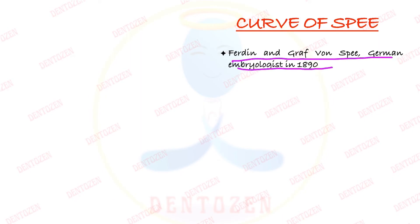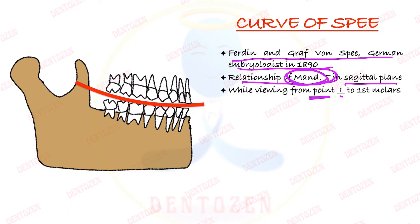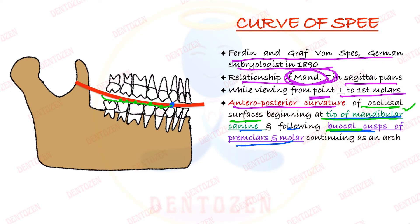The curve of Spee was given by Ferdinand Graf von Spee, a German embryologist, in 1890. He visualized the relationship of mandibular teeth in the sagittal plane. When viewing perpendicular to the first molar, we see an anterior-posterior curvature of occlusal surfaces starting from the tip of the mandibular canine, following the buccal cusps of the premolars and molars. Buccal means the outer cusp. The posterior teeth — premolars and molars — have buccal cusps towards the outside and lingual cusps towards the inside, but we are talking about the buccal cusps.